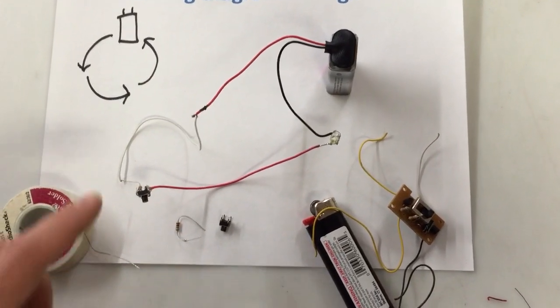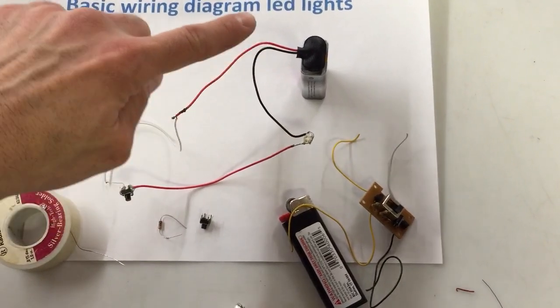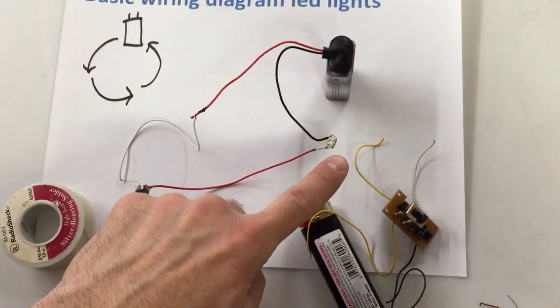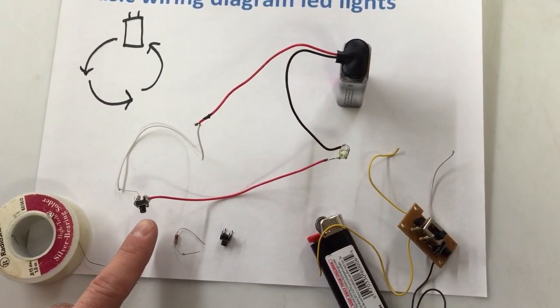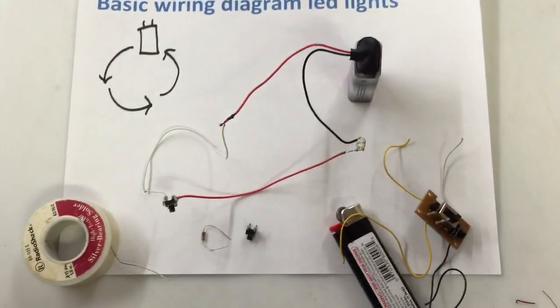As you see here, I have the battery, positive and negative, and I'm going in a continuous circle. What I have here is an LED light and then between that I have a little on-off switch. I just slapped this together real quick so I could teach you how to do it.